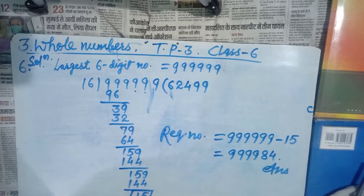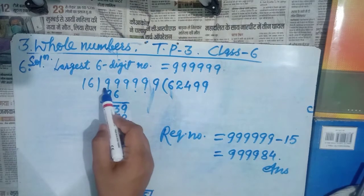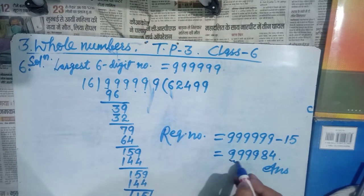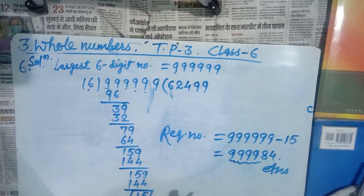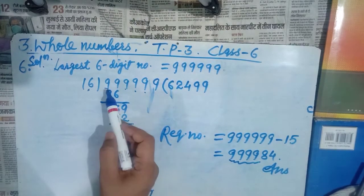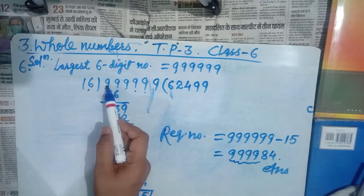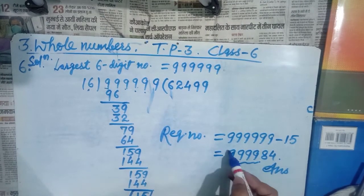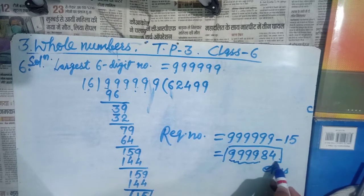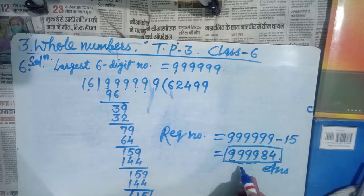If a number has a remainder after dividing, it is not exactly divisible. So we subtract that remainder from the dividend to get a new number that is exactly divisible. Here the remainder is 15, so we subtract 15 from 999999. The result is the largest 6-digit number exactly divisible by 16.